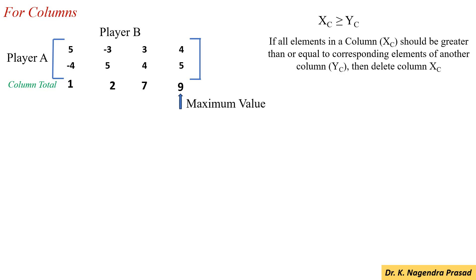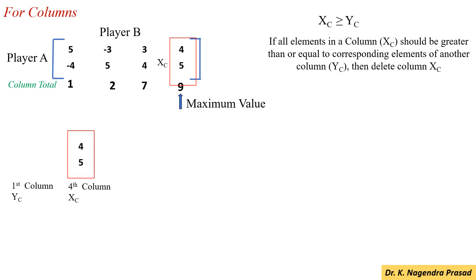First, we have to compare the 4th column elements with the 1st column elements. Here, the 4th column elements are 4 and 5. And the 1st column elements are 5 and minus 4.